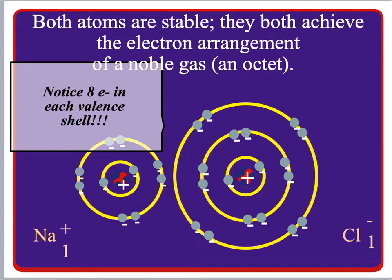Once the atoms have transferred the electron from the sodium atom to the chlorine atom, the sodium atom becomes smaller because it's lost its outer shell, but it now has eight electrons in its valence shell. The chlorine has become slightly larger due to increased electron repulsion, but it also has eight valence electrons. Now each looks like a noble gas — sodium like neon with 10 electrons, and chlorine like argon with 18 electrons. They're now very stable.